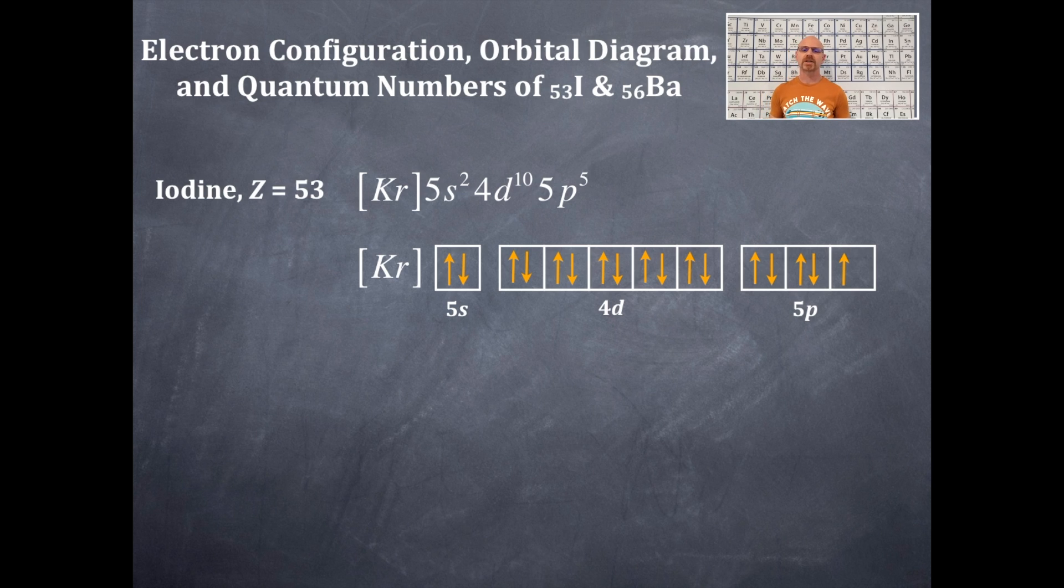Now we should be able to get the number of valence electrons here for iodine. You should be able to get it from its location on the periodic table and the column, the group in which it is in. But remember, valence electrons are the largest quantum number, s and p, of the same largest quantum number. So what's the largest quantum number here? One, two, three, four, five. It's a five.